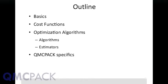Here is a brief outline of the talk. First, I'm going to review some of the ideas that David just mentioned to set notation and refresh your minds. Then we're going to talk about cost functions — what exactly do we want to optimize or minimize. Then we're going to do a brief discussion of optimization algorithms, what we can do to optimize the cost function and what type of estimators we need to evaluate in Monte Carlo. Finally, I'll say a few specific things about QMCPACK.